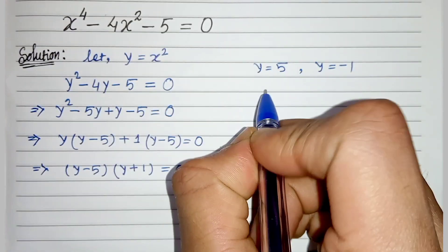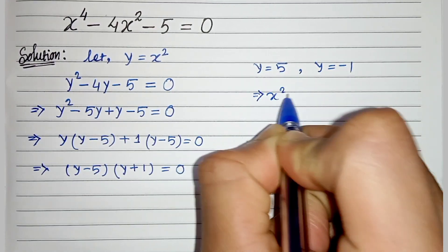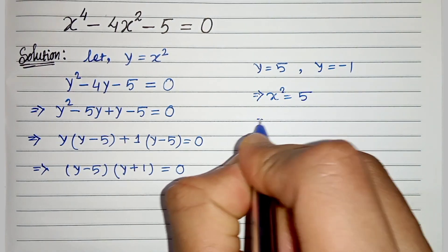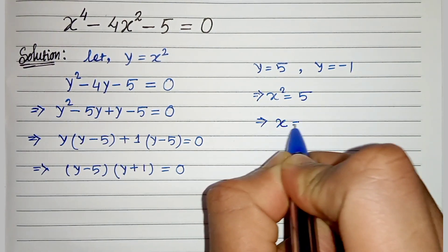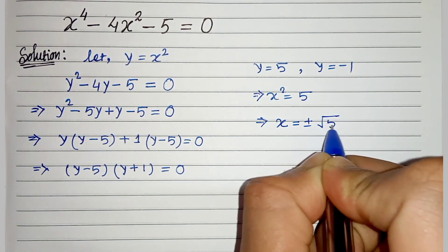Now let's replace y by x square. So we will get x square equals 5. Therefore, x equals plus minus root 5.